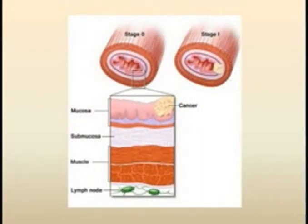The information provided by these tests can in turn guide the treatment options available for you. In general, stage 0 represents the earliest form of the cancer, called carcinoma in situ, with no clear invasion. Stage 1 cancer is found only in the top layers of cells lining the esophagus. These stages are most amenable to cure via surgery.